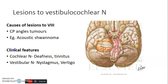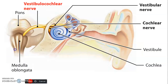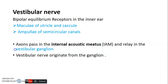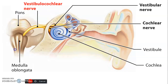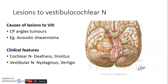Key points: the cochlear receptor is the organ of Corti using the spiral ganglion, while the vestibular receptors are the maculae of the utricle and saccule and the ampullae of the semicircular canals using the vestibular ganglion. Lesions of the vestibulocochlear nerve — such as tumors at the cerebellopontine angle or acoustic schwannoma — cause deafness and tinnitus if the cochlear part is affected, and nystagmus and vertigo if the vestibular part is affected.